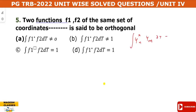The orthogonality condition states that the integral of the product of the two wave functions equals zero. When this integral equals zero, the functions are orthogonal. If the function is normalized, the integral equals 1. So the orthogonality condition is the integral equals zero.